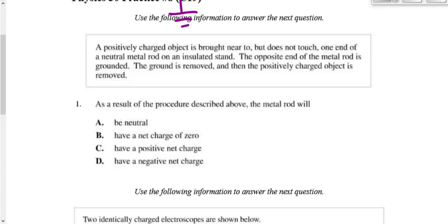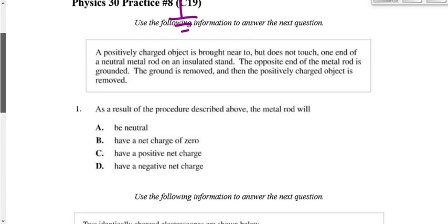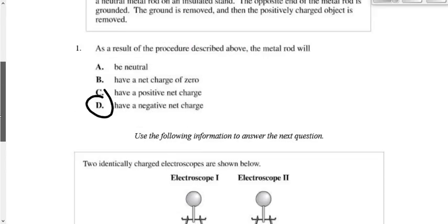Alright. So what do we got here? As the result of the procedure described above, the metal rod will become negative. It becomes negative. And it becomes negative as a result of gaining electrons from the ground. Okay?